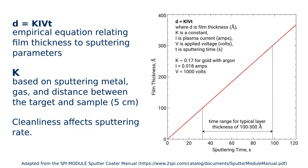This equation can help determine an appropriate sputtering time. D equals K I V T is an empirical equation relating film thickness to sputtering parameters, which are detailed in the plot. For this setup, which assumes the sample is 5 centimeters from the target and the sputtering environment is clean, you can achieve a typical layer thickness by sputtering for approximately 30 to 100 seconds.